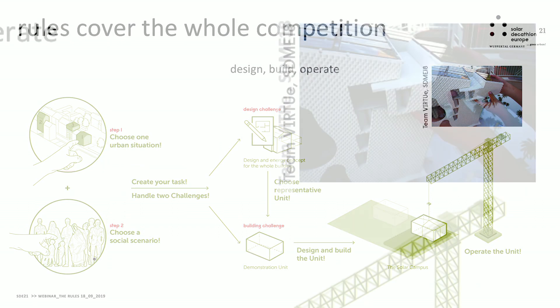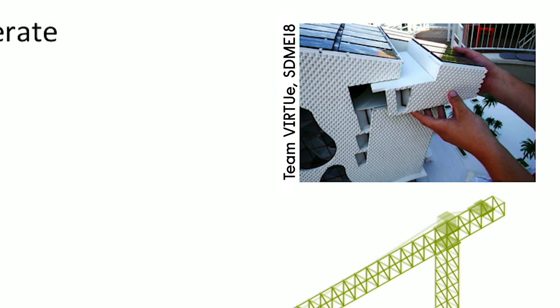On the picture in the upper right corner you can see how teams have handled that in the past. This is a picture from Solar Decathlon in the Middle East in 2018 from a Dutch team. You see the architectural model of the full building and you see how the hand touches a part of it. This is the demonstration unit — this part will be built on site and tested. The rules as a new item have to cover both the design challenge and the building challenge.